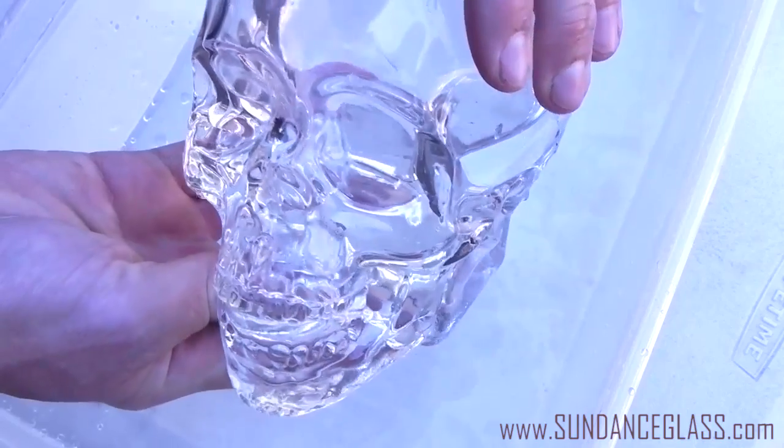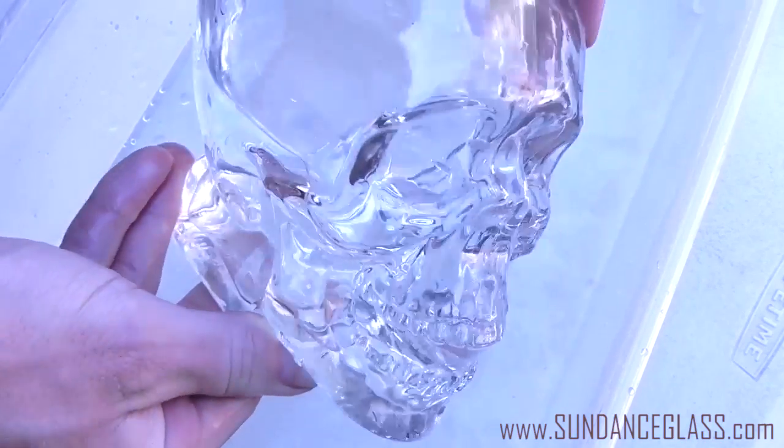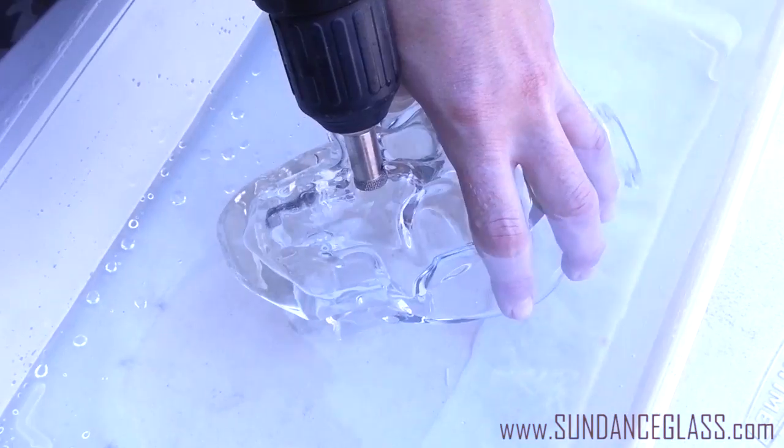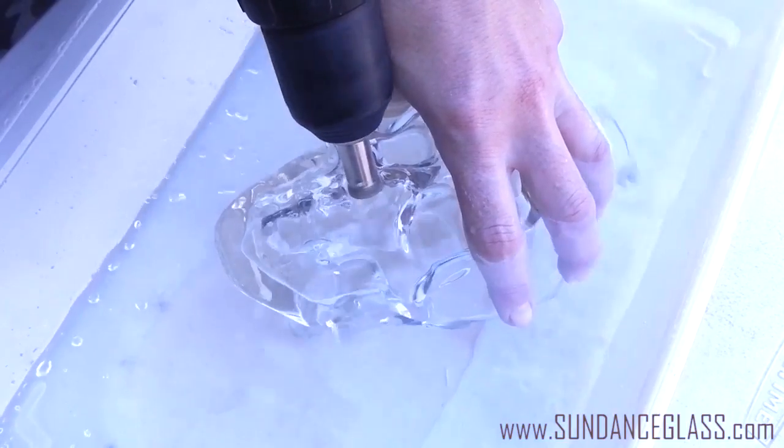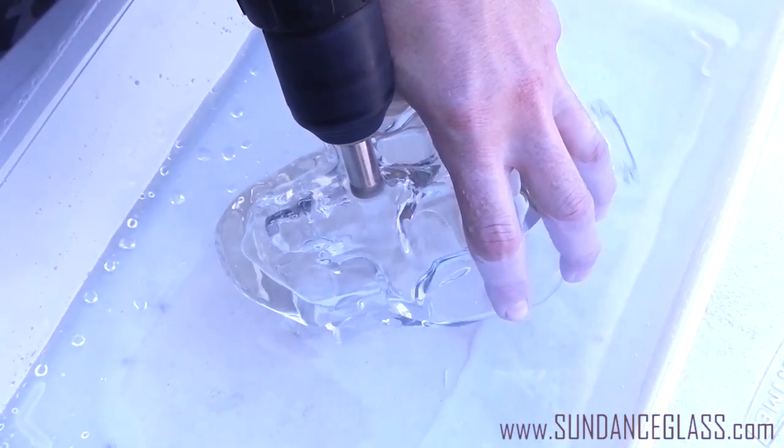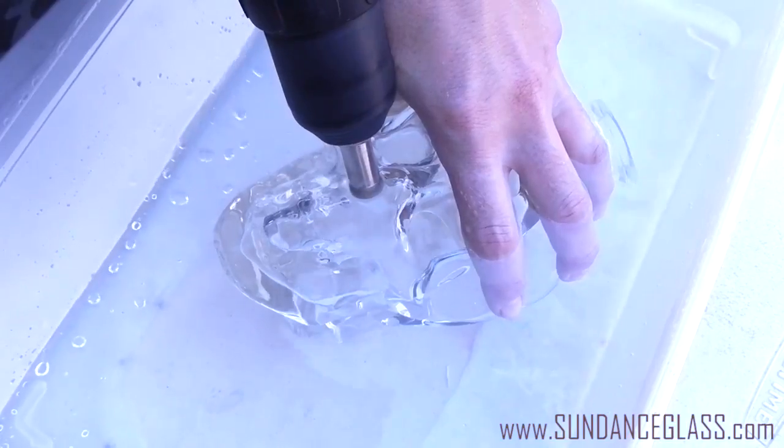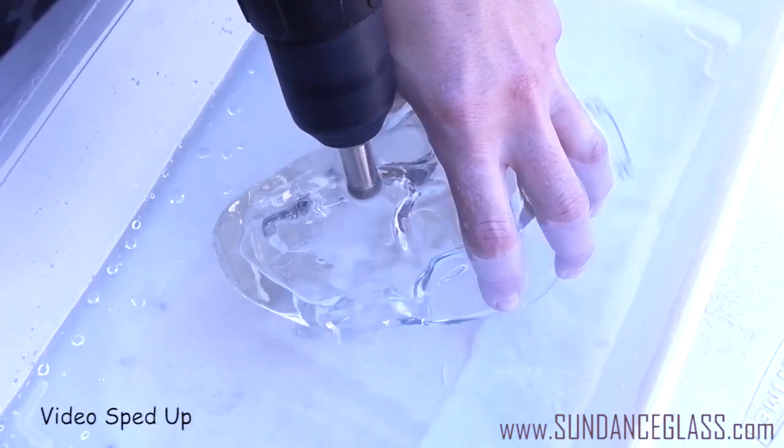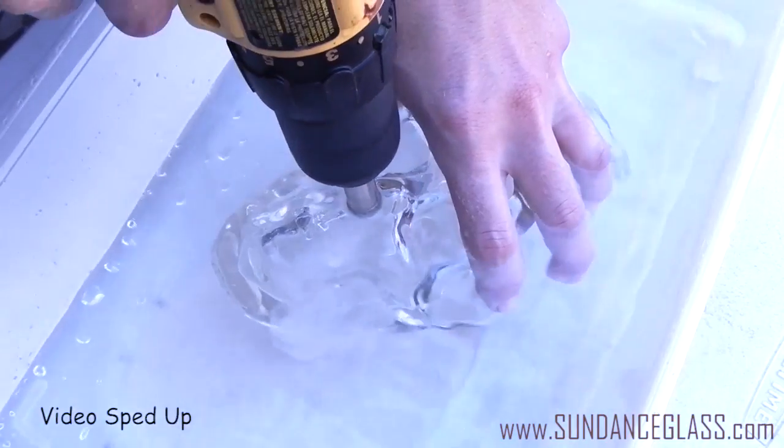Now that we know how to use the drill bit, we can be creative in the types of projects we use them for. For this project, we are submerging the glass in water rather than running water over the top. As you will see, the process is the same.